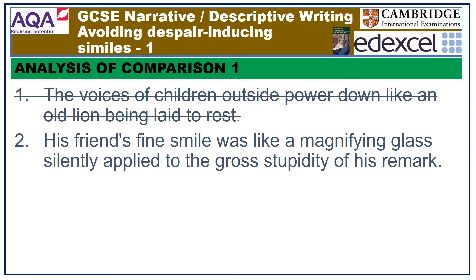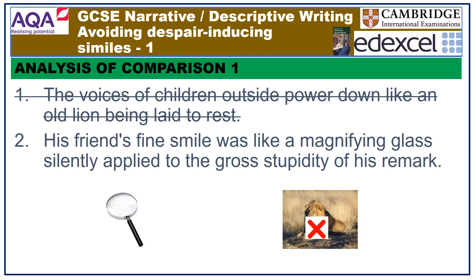But for me, the second simile taken from Edith Wharton's novel is so much more interesting — and not just because it doesn't reference a bloody lion. It's so much more subtle and original. Essentially, it is saying that the friend has realised how stupid his comment was but doesn't want to say this directly. Instead, it is revealed through the fine smile. The reference to a magnifying glass suggests that the smile enlarges and accentuates the foolishness that the man feels about his comments. So, partly through this interesting simile, we also have an example of showing not telling. A much less effective writer would have signposted the friend's feelings far more clearly — for example, 'don't be ridiculous,' or body language such as 'he rolled his eyes and smirked.' Instead, we have the greater subtlety of the fine smile.